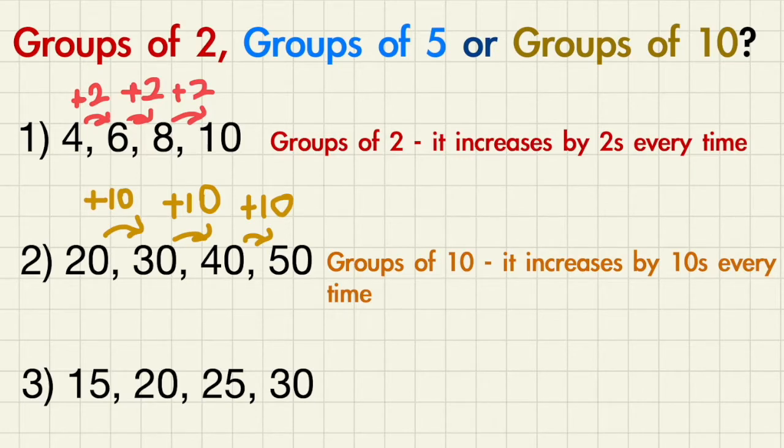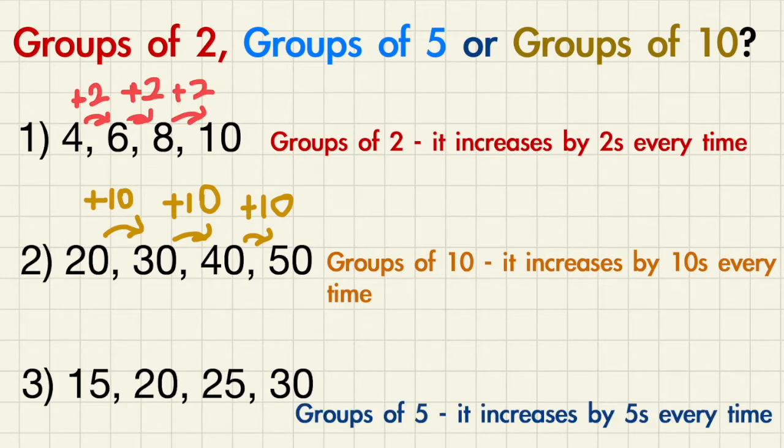How about for the third question, do you know how much it's increasing by? That's right, it's increasing by 5s every time. 15 plus 5 is 20, 20 plus 5 is 25, and 25 plus 5 is 30.